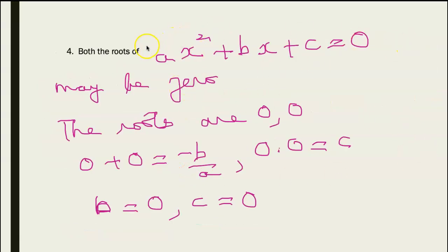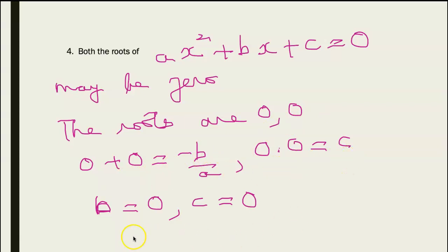Find the condition that both roots of ax² + bx + c = 0 may be 0. So let the roots be 0 and 0. So I have 0 + 0 = -b/a and 0 × 0 = c/a. So b = 0 and c = 0.